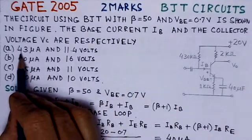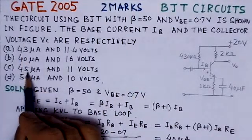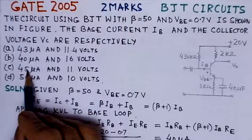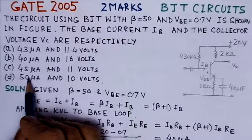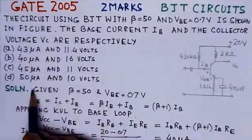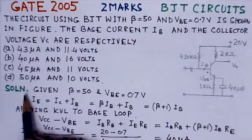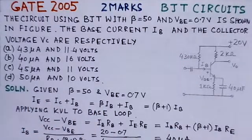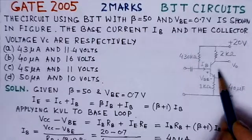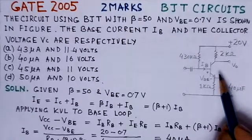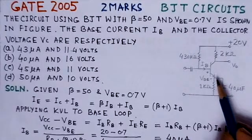There are four options given for the base current and the collector voltage, and we have to find which is the right option. The circuit given here is of emitter resistor bias configuration.